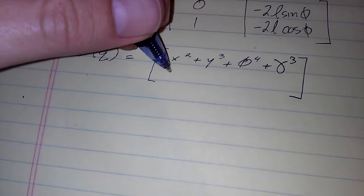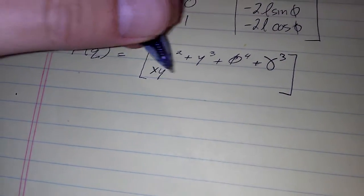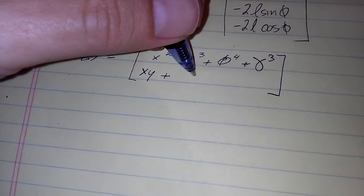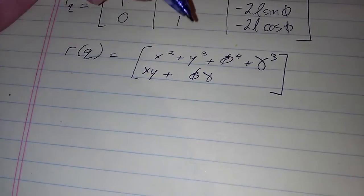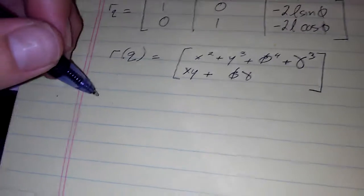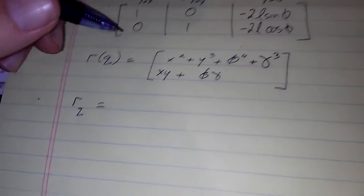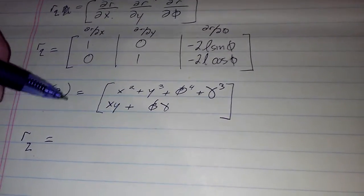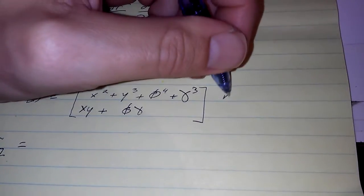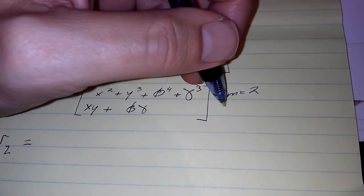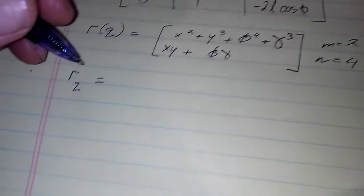as well as xy plus phi gamma. That ought to be sufficiently annoying. So r of q: we have two functions, m equals two, we have four variables, so we're going to end up with a two by four.